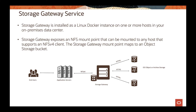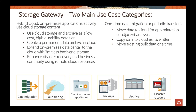The storage gateway has connectivity to OCI object storage running on your account, which makes it easy to copy data over. When your application copies data to the object storage via NFS v4, the storage gateway recognizes when data lands on the specific mount point and starts copying it from that mount point to the object storage.